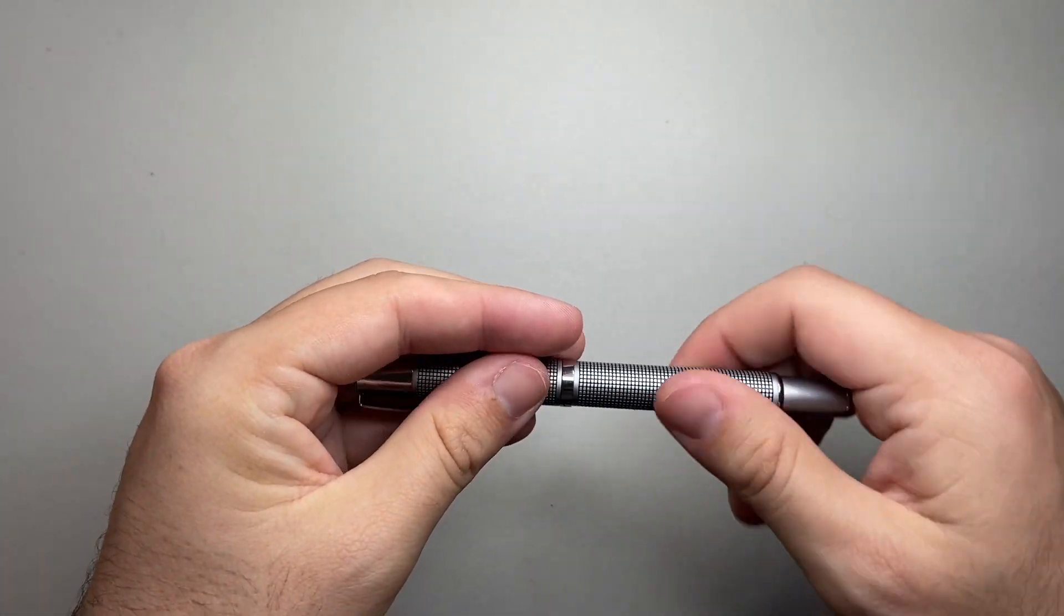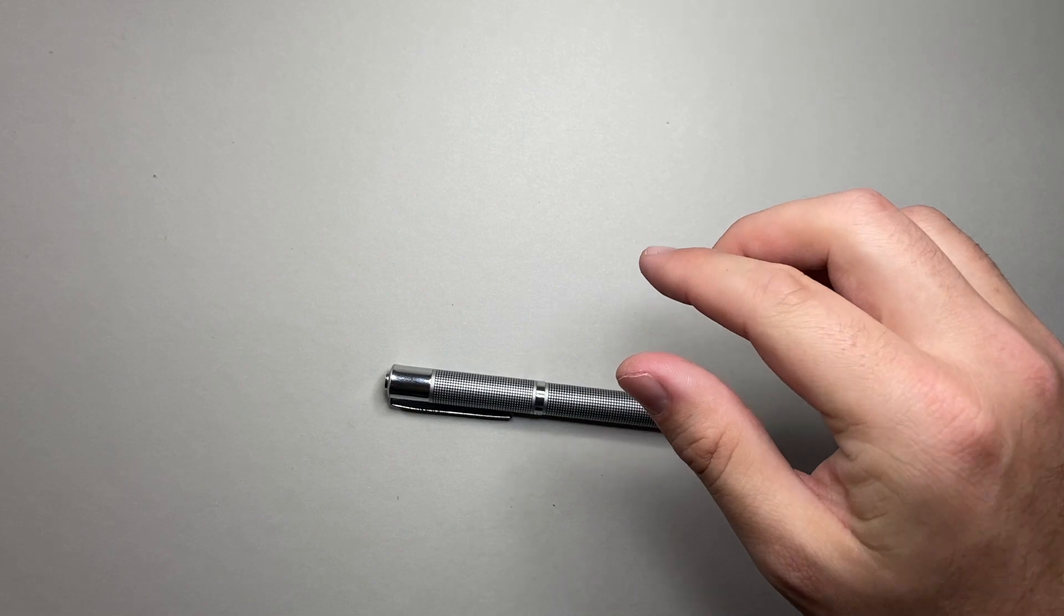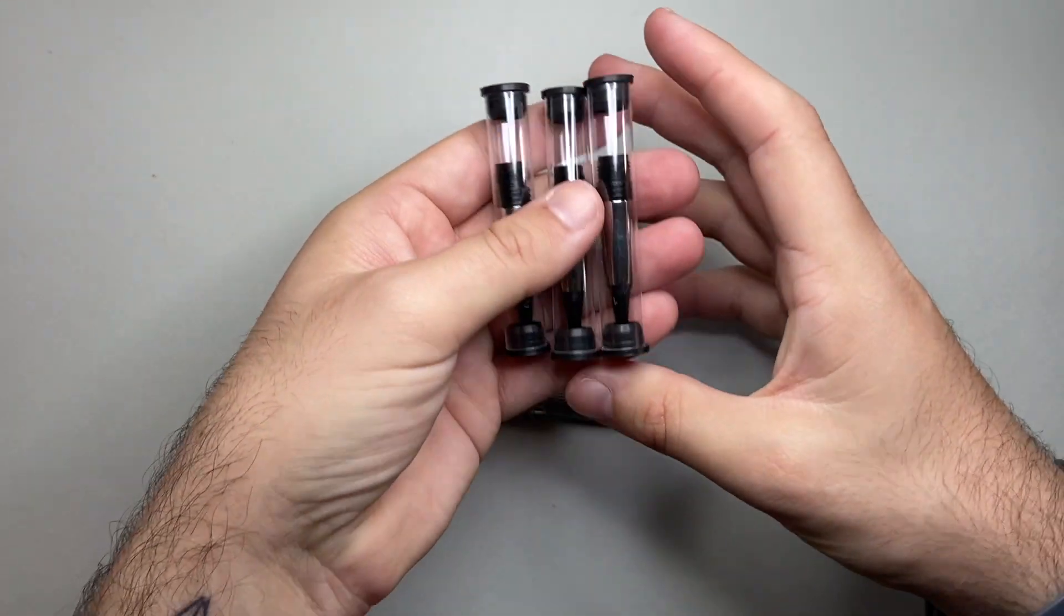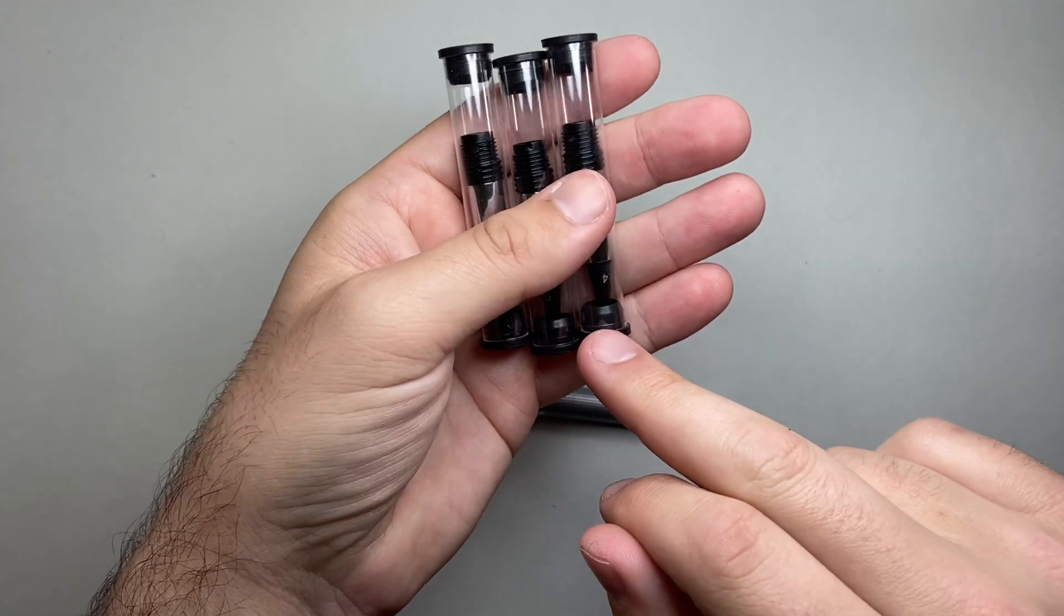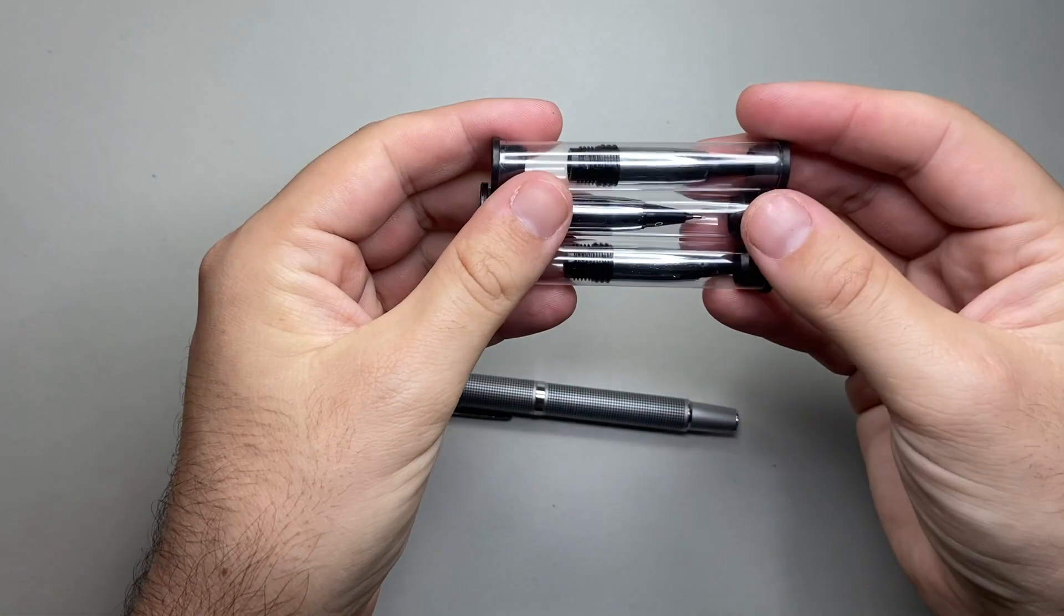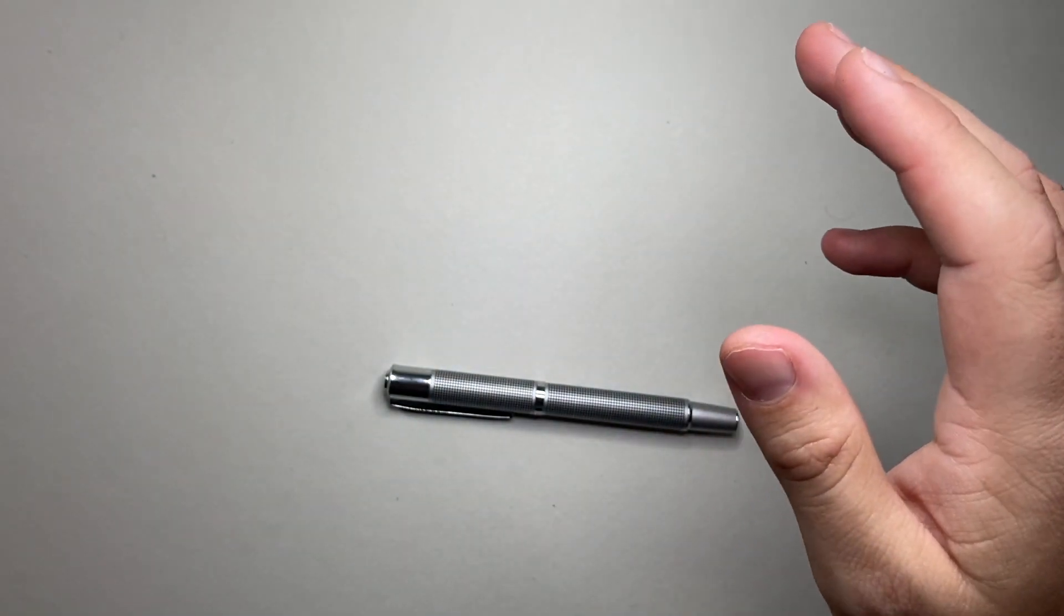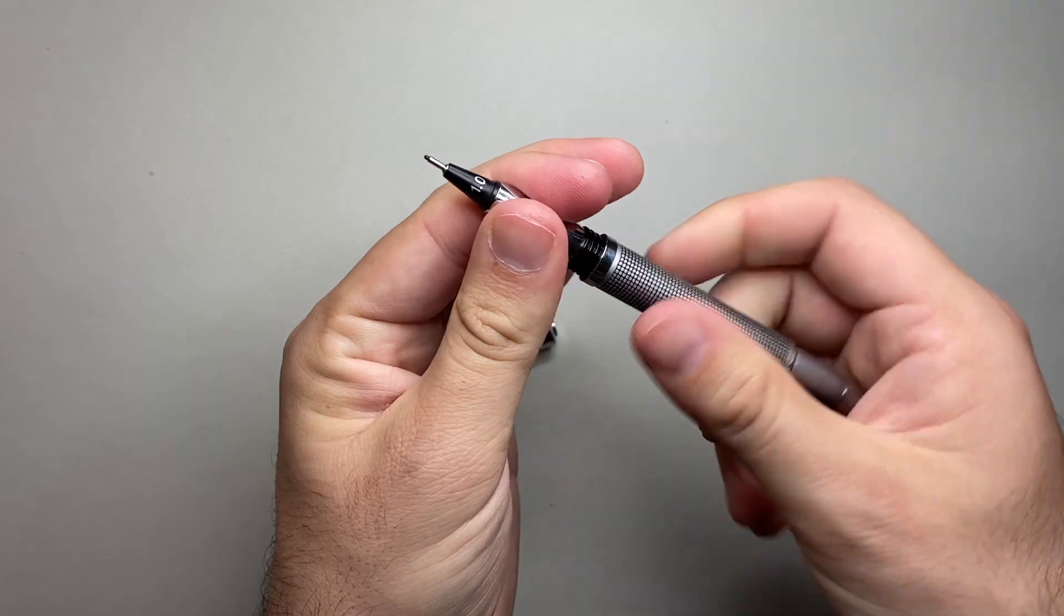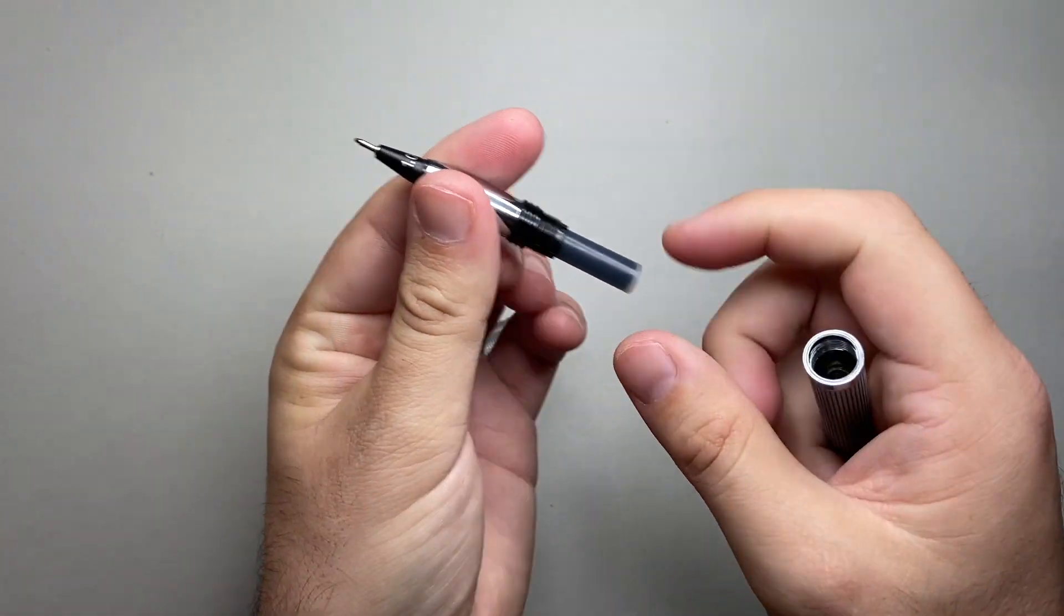There are other options for the nibs and I was sent three others. So I got the 0.8, 1.2 and 1.4. I'm going to talk a little bit about these in a minute, but these are what are available. As it is, fountain pen ink. So you can put a cartridge in here.